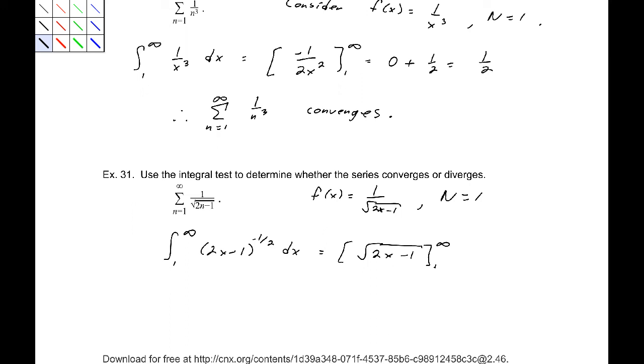Alright, now, if we take that integral, we will get the square root of 2x minus 1 evaluated from 1 to infinity. If you don't believe me there, let's take the derivative 2x minus 1 to the 1 half. If we take the derivative of that function, we get 1 half 2x minus 1 to the negative 1 half times 2 which is 1 over the square root of 2x minus 1. Okay, so that taking our derivative there.